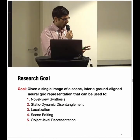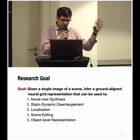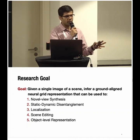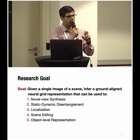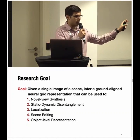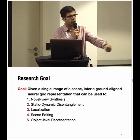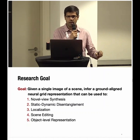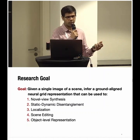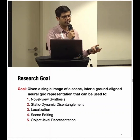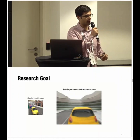To formalize the goal: at test time, the method takes a single image of the scene and produces a persistent representation — not stored in network parameters, but as a discrete grid aligned to the ground. This scene representation supports multiple downstream tasks: novel view synthesis, static-dynamic disentanglement, localization, scene editing, and object-level representation.